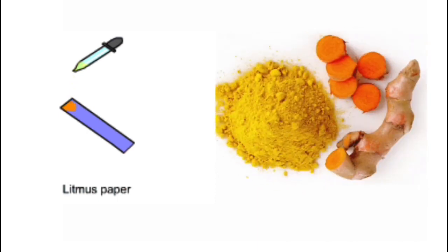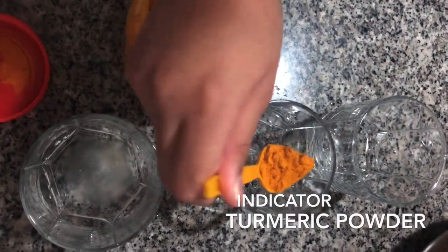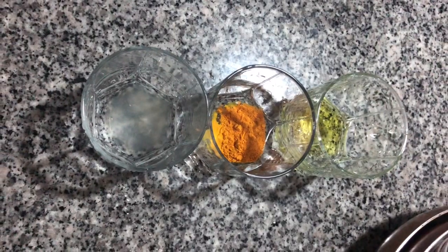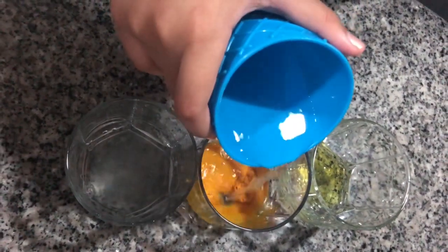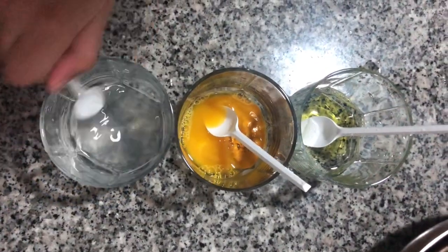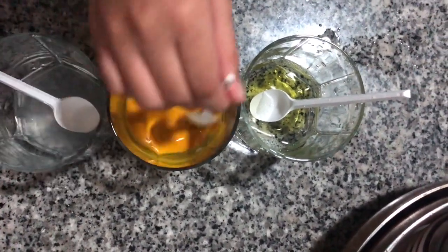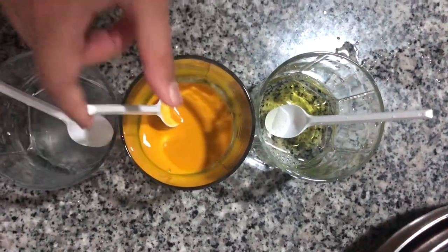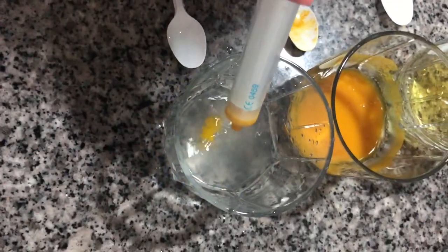Now let's get started with the experiment. Take three cups. Add lemon juice to the first cup, some turmeric powder to the second cup, and some disinfectant liquid to the third cup. Let's add some water to all three cups and stir them. Then take a few drops of turmeric water from the second cup in a syringe or dropper and add it to the first cup.